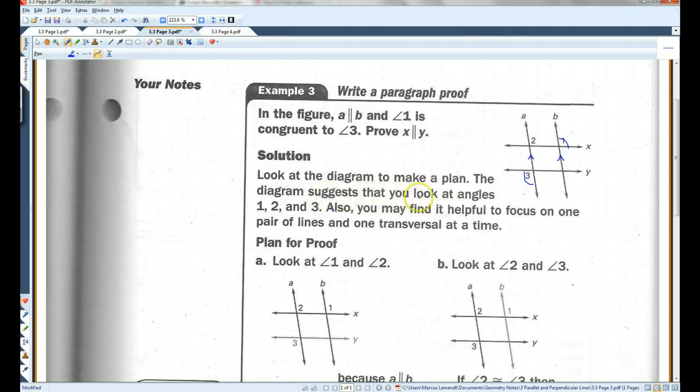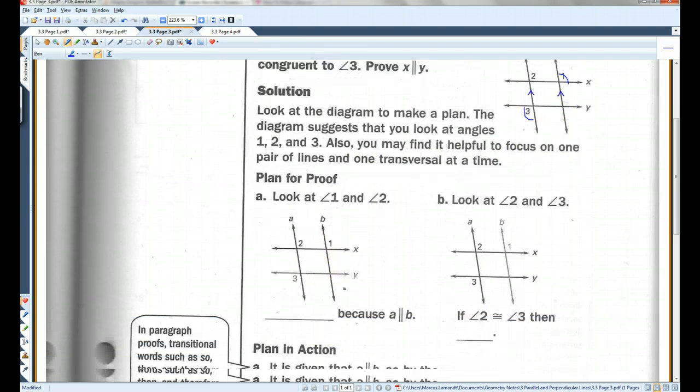The diagram suggests that you look at angles 1, 2, and 3. Also, you may find it helpful to focus on one pair of lines and one transversal at a time. So, look at angles 1 and 2.